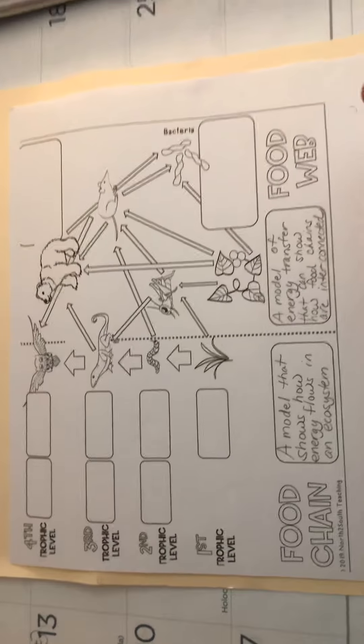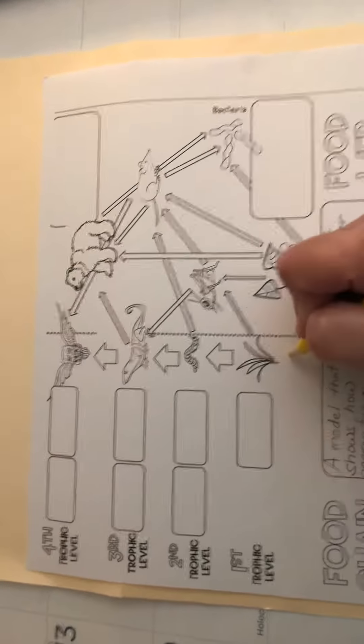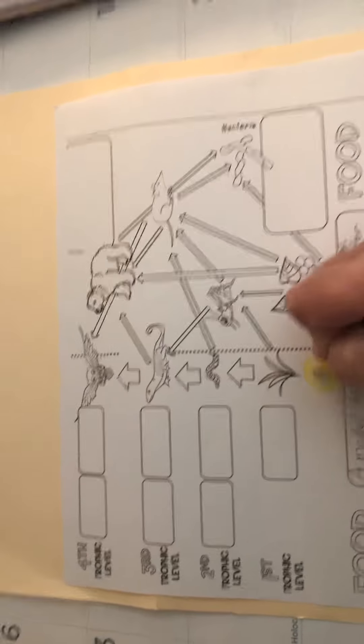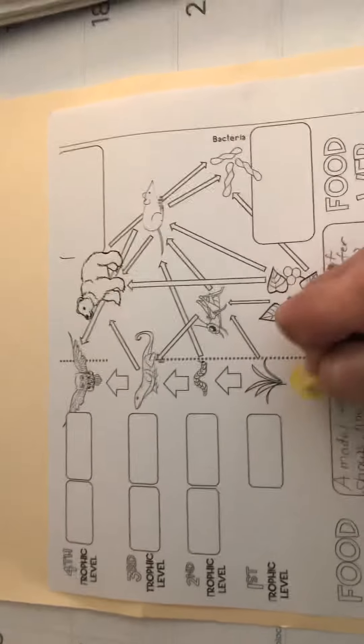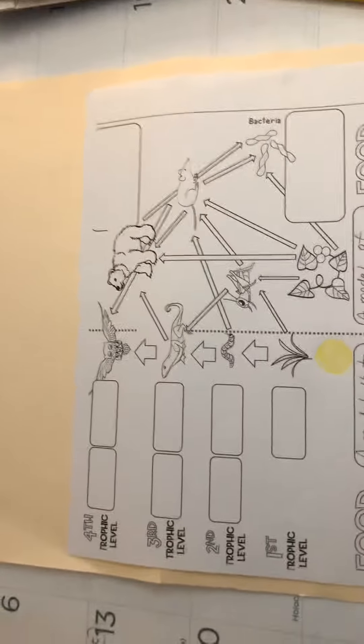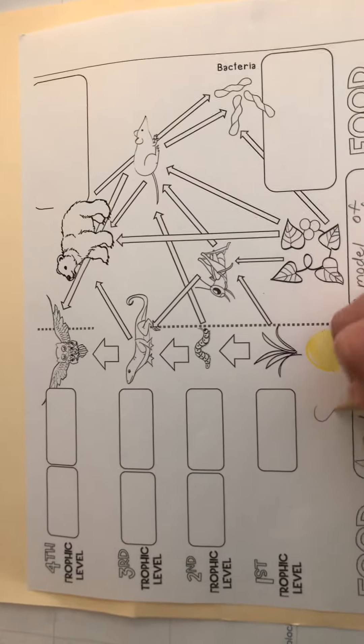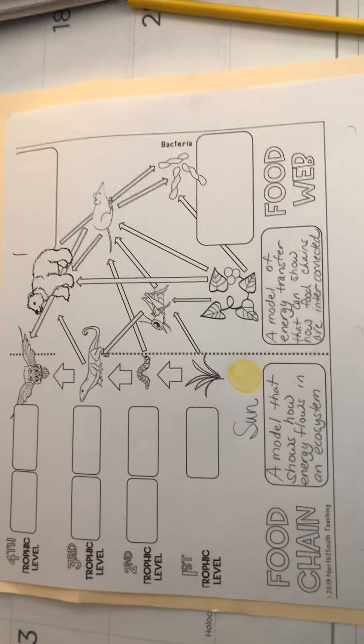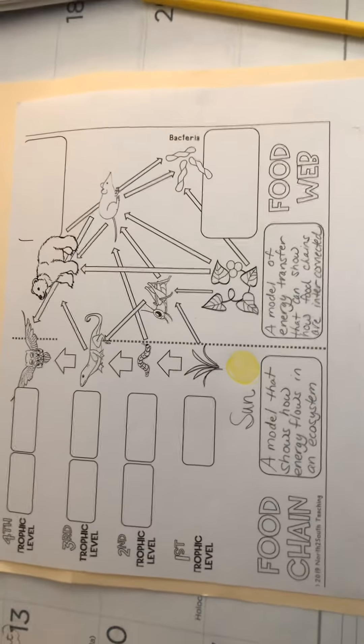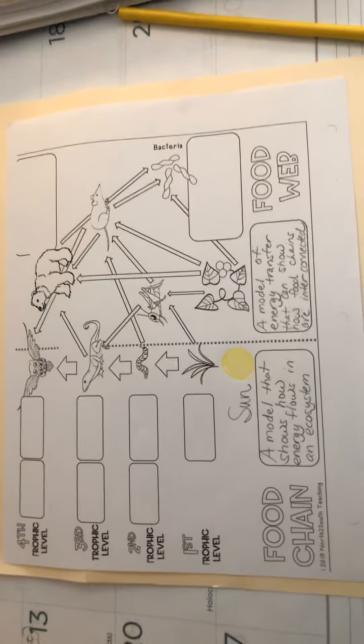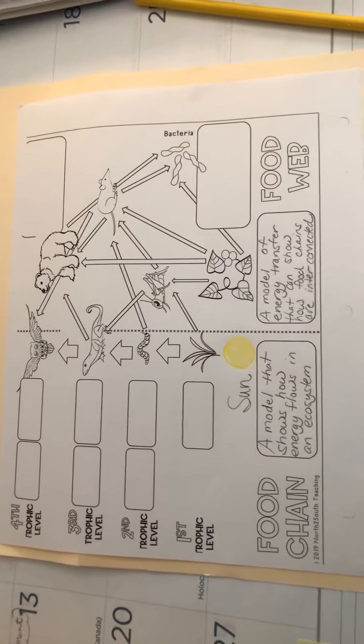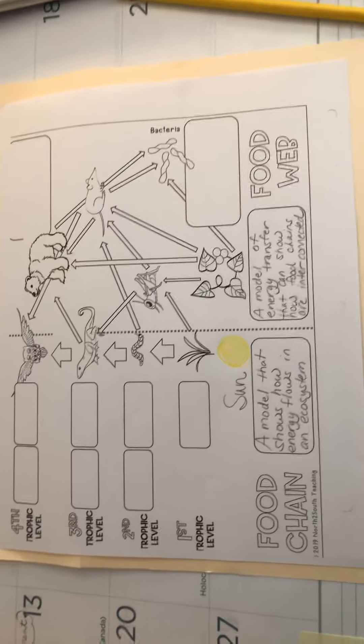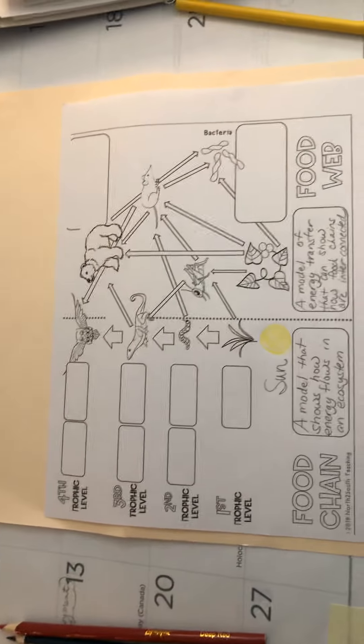ecosystems, in all food chains, in all food webs, the energy originates from the sun. It all starts here with the sun and then moves up the food chain. A food web is very similar; it shows how food chains are interconnected to each other. If we're moving up here, what